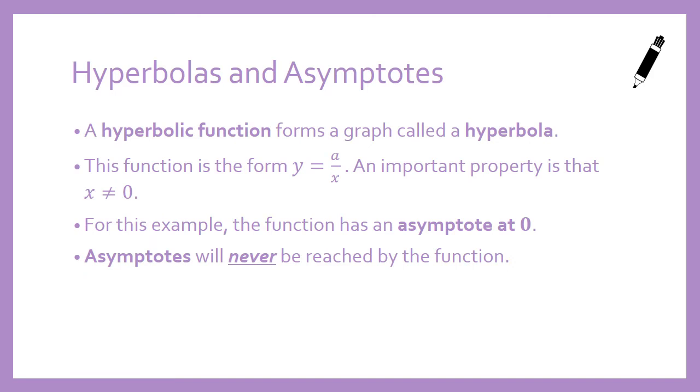So a hyperbolic function forms a graph called a hyperbola. This function is in the form y equals a divided by x. Now a really important property is that x cannot be zero in this function. So we would say this function has an asymptote at zero. Asymptotes will never be reached by the function. There's no circumstance where we can get an output when we input zero because any number divided by zero is actually undefined.